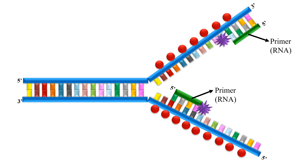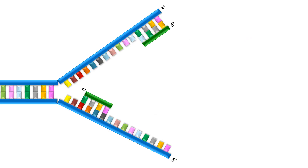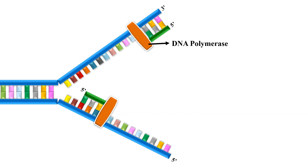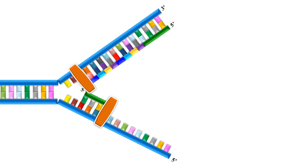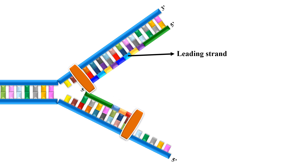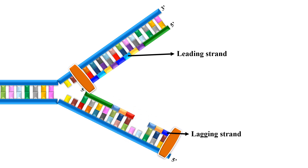After the formation of RNA primers, the main enzyme of DNA replication — DNA polymerase — will come and extend these primers to create new DNA strands. It will create two strands in opposite directions. One strand will be made continuously without any gap, and that strand is known as the leading strand. The other strand will be replicated in segments with gaps. These segments are called Okazaki fragments, and that strand is called the lagging strand.